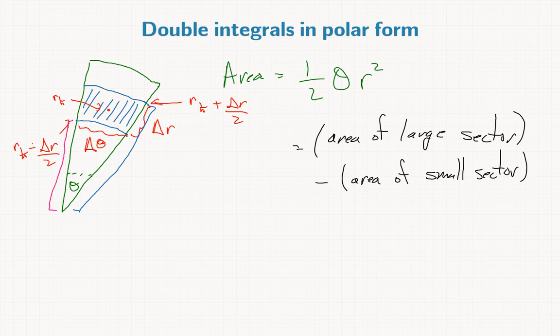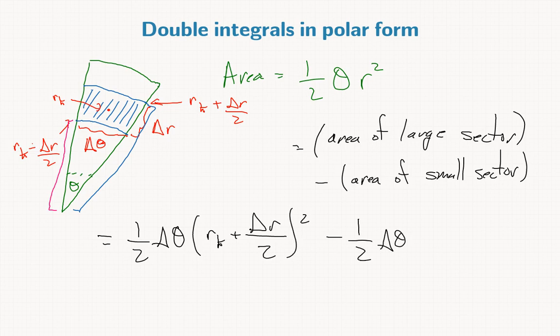By our formula, that will be one half delta theta times (r_k plus delta r over 2) squared, minus one half delta theta (r_k minus delta r over 2) squared.